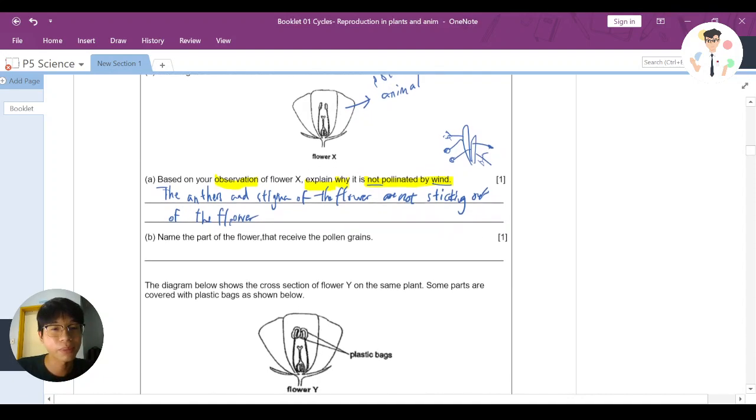The next one: name the part of the flower that receives the pollen grains. This is something you should know. Pollination is a transfer of the pollen grains from anther to stigma. So stigma is the one that receives the pollen. So the answer is stigma.